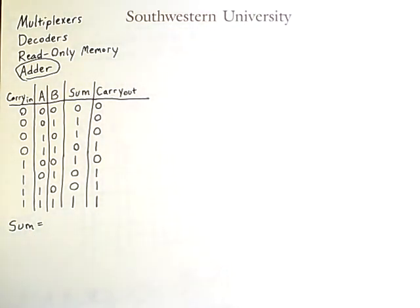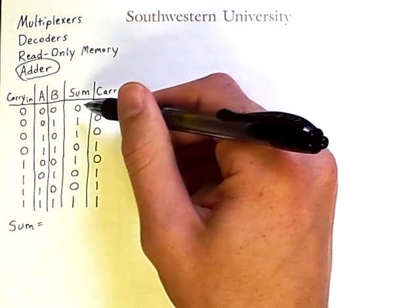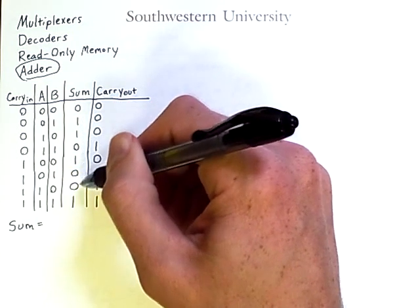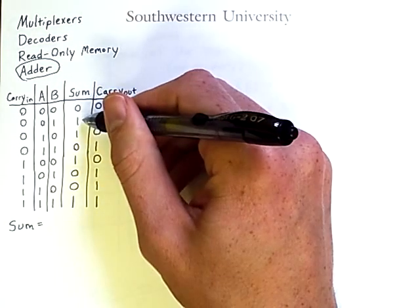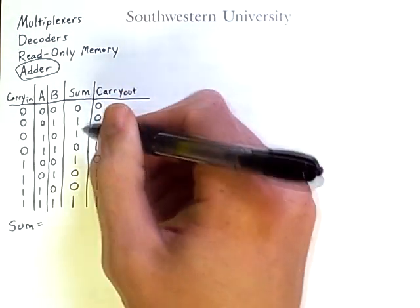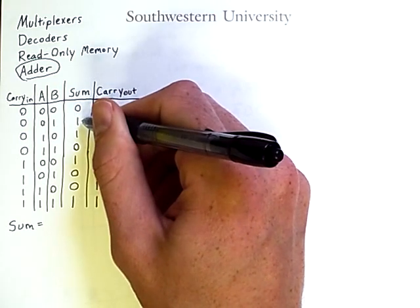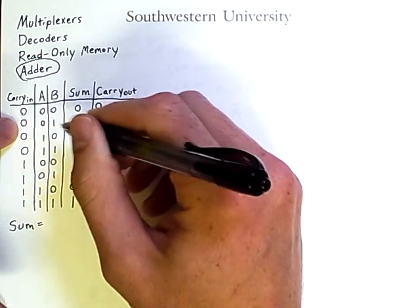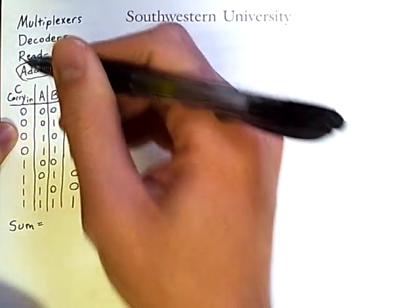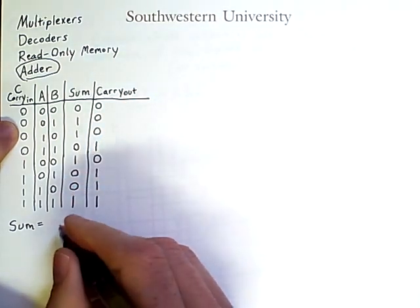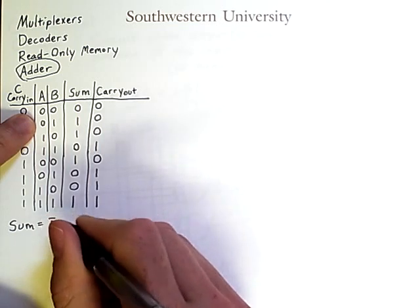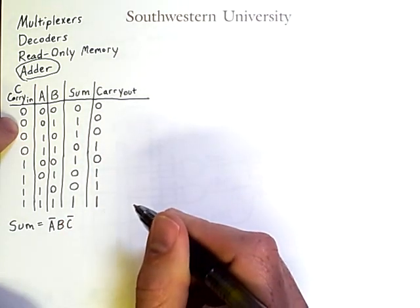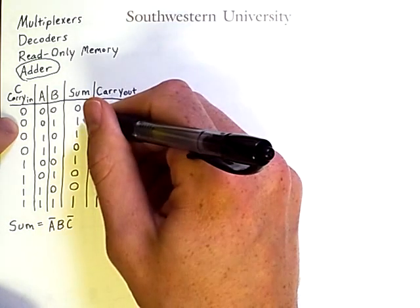Now, a way to create a Boolean expression out of a truth table is to look at the column in question and look at the rows where the output is one. The expression needs to be true whenever one is the output of a row. That means that sum will be true, in this case, when a is false and b is true and the carry in is false. And we'll simplify our expression by calling the carry in c. So part of our expression is to have not a and b and not c. But that's not the only possible values that lead to a sum that is true.